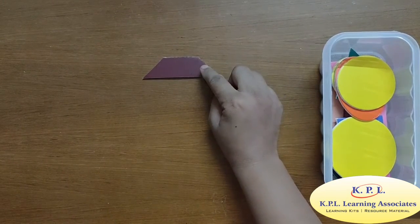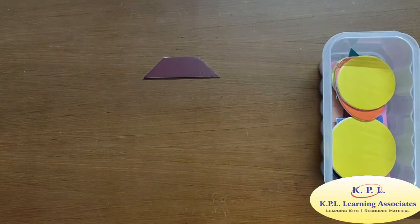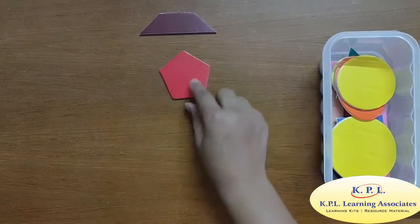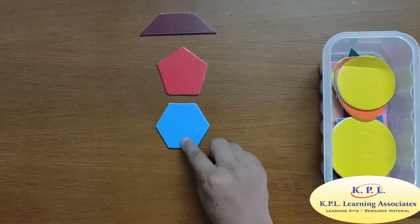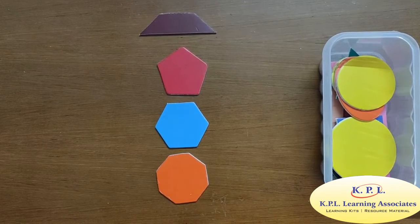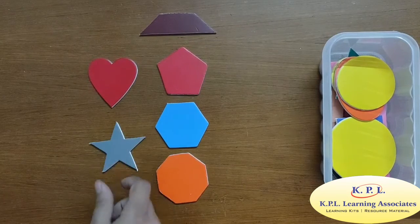Here we have some more shapes. Another four side shape that is trapezium in which one pair of opposite side is parallel to each other. Five side shape is pentagon. Six side shape is hexagon. Eight side shape is octagon. Heart and star.